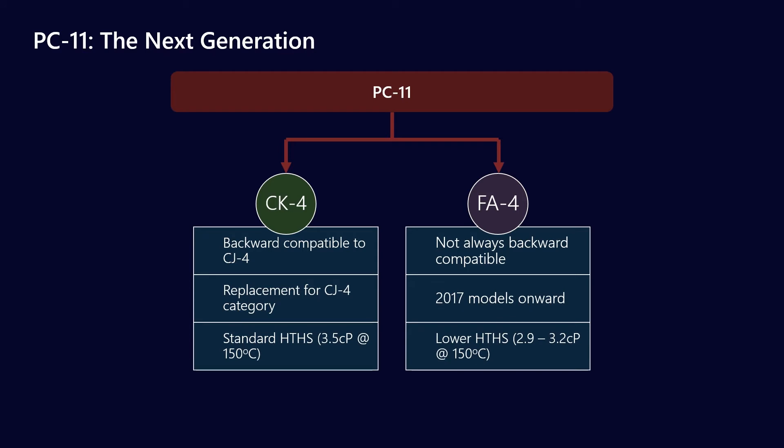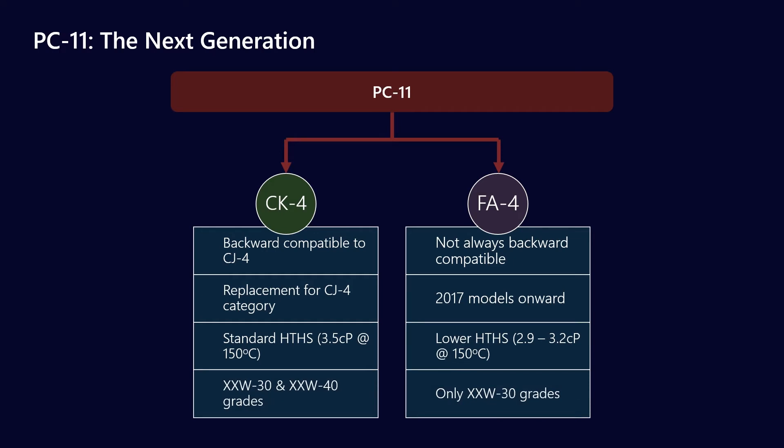The reason for this is twofold. Firstly, and this is the main one, CK4 operates on a standard high temperature high shear viscosity — for diesel engine oils that's pretty much always been 3.5 centipoise at 150 degrees Celsius. For FA4, we're actually pulling that down, reducing the high temperature high shear viscosity to between 2.9 and 3.2 centipoise. Additionally, CK4 will be available in the traditional 30 and 40 weight grades — so 10W30, 5W30 synthetics, 10W40, and the more standard 15W40. FA4 on the other hand will only be available in 30 weight — so a 5W30, 10W30, or even maybe in the future a 0W30, but it will always be a 30 weight.